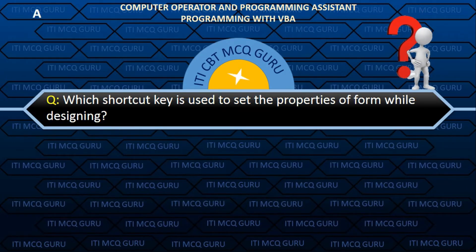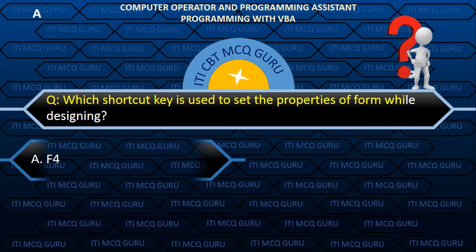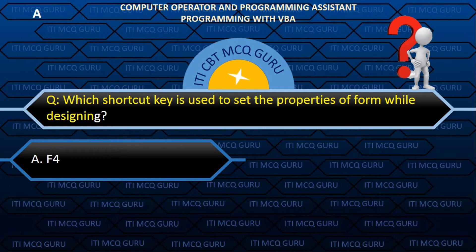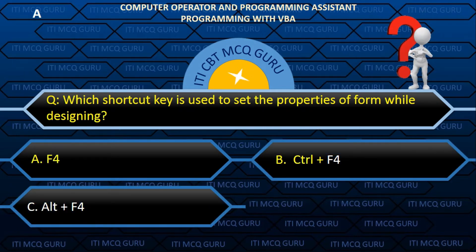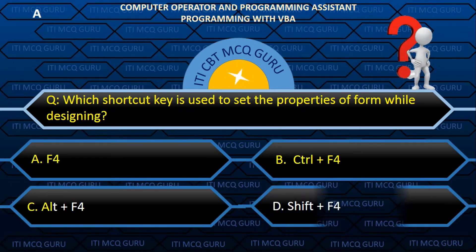Which shortcut key is used to set the properties of a form while designing? Answer: A. F4.